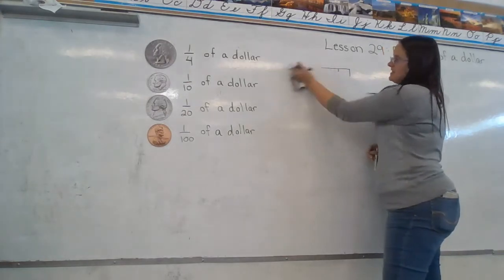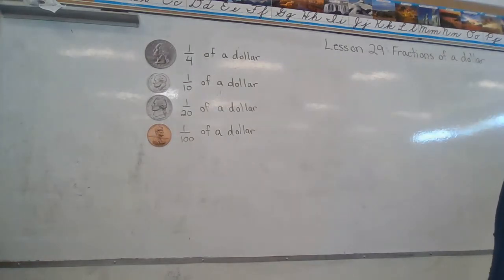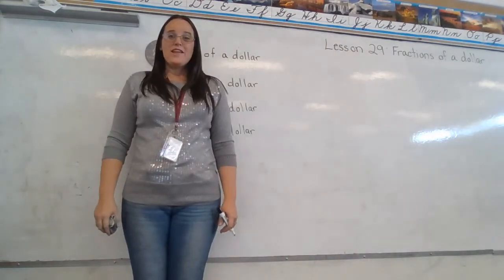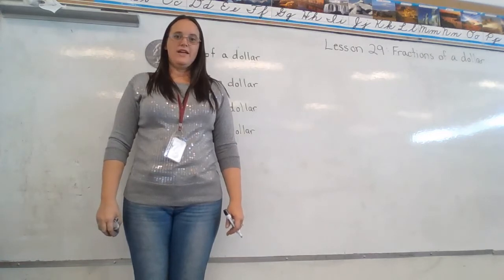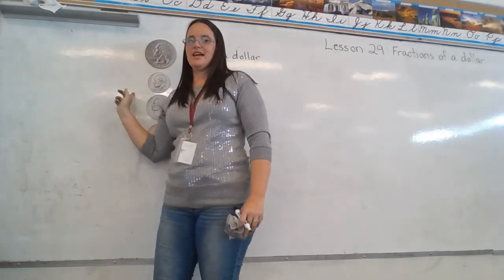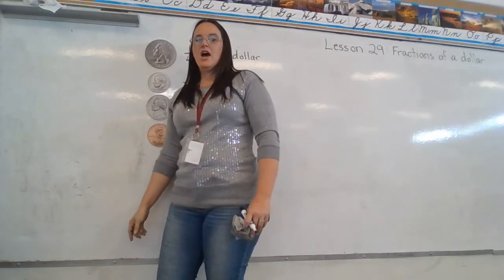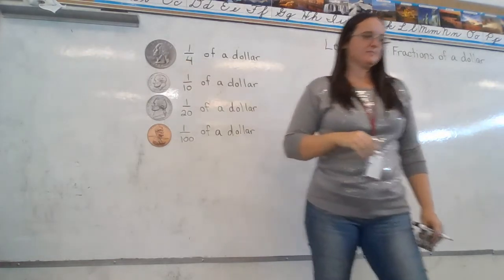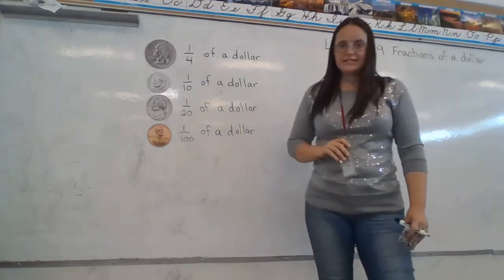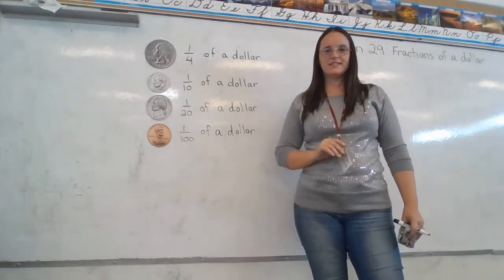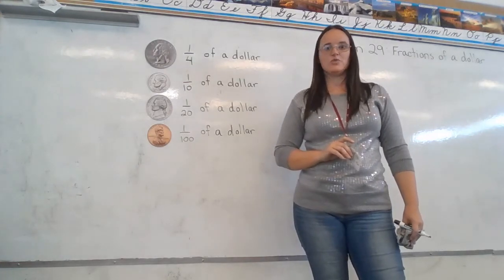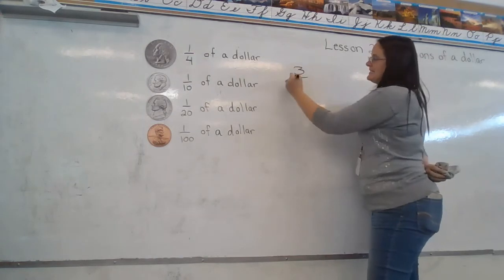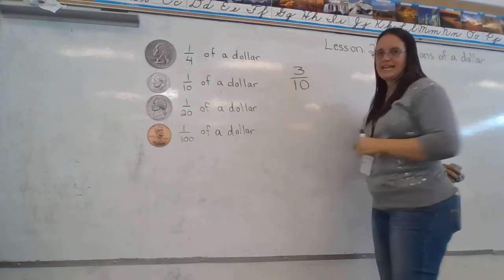Next question: which coin is one-fourth of a dollar? Is it the quarter, the dime, the nickel, or the penny? One-quarter is a fourth of a dollar — quarter is another word for fourths. And three dimes is what fraction of a dollar? I have three of them and it takes ten to make a whole dollar. So three-tenths would be my answer.